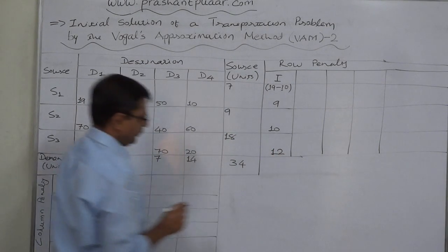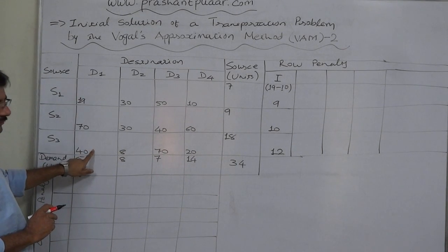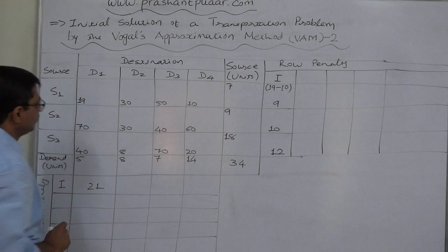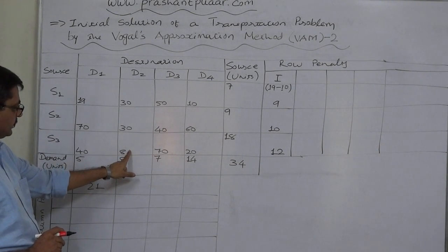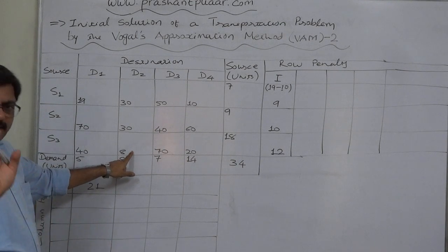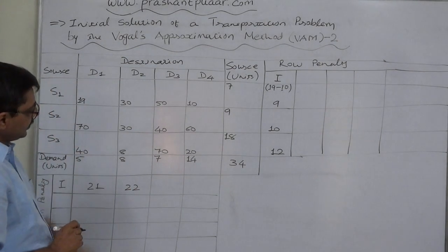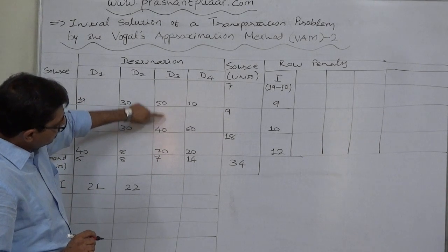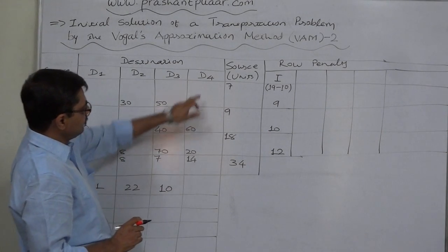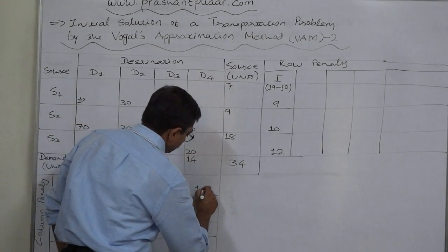For column D1, the lowest cost is 19 and the immediate higher cost is 40, so the penalty is 40 minus 19 equals 21. For column D2, the least cost is 8 and the immediate higher cost is 30, so the penalty is 30 minus 8 equals 22. For column D3, the least cost is 40 and immediate higher is 50, so the penalty is 10. For column D4, the least cost is 10 and immediate higher is 20, so the penalty is also 10.